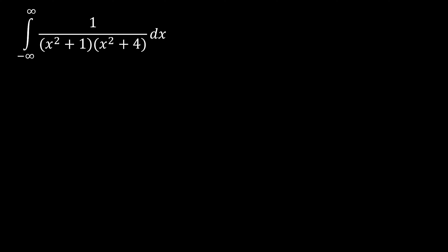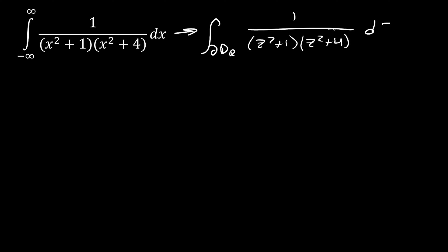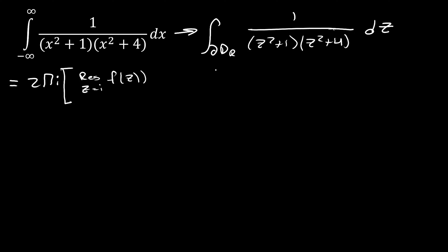Here we have a very similar looking integral to the one before, but now we have an (x² + 4) term, introducing extra singularities. Converting to a complex integral, we can see singularities at ±i and ±2i. But we only need the upper half plane, so we need positive i and positive 2i. This integral equals 2πi times the sum of residues: the residue of f(z) at z = i plus the residue of f(z) at z = 2i.